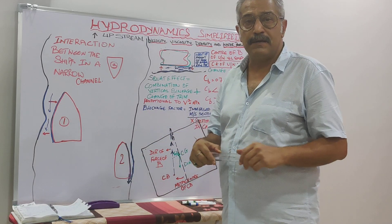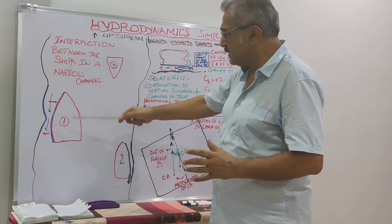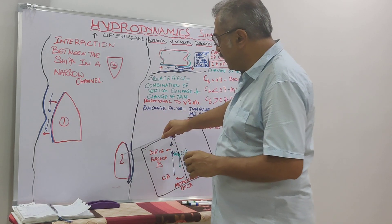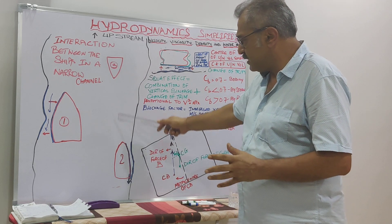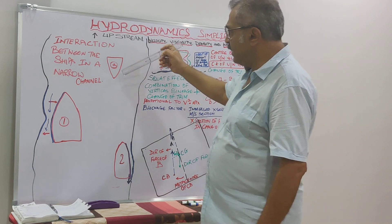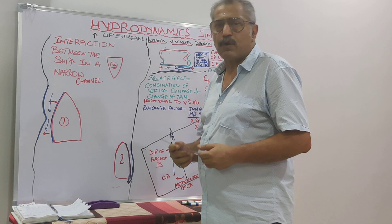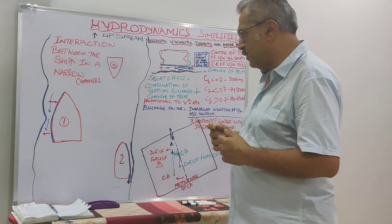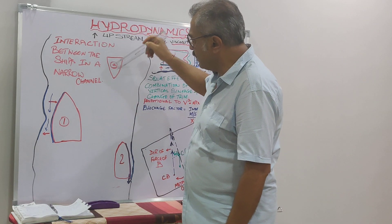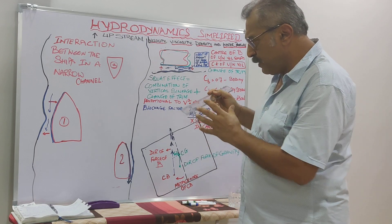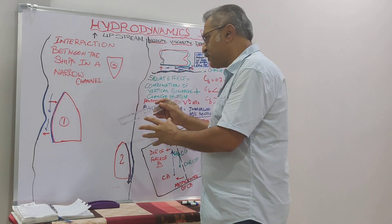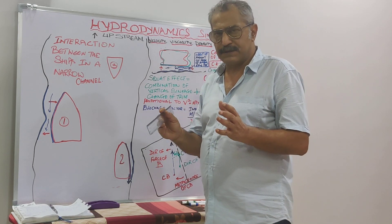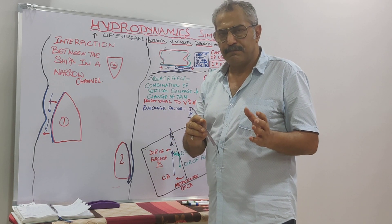Coming back to my initial statement: there are three ships — one, two, and three. Let's say this could be a Suez Max tanker. This one is a chemical tanker, say around 25,000 tonnes. And this being a small vessel — an offshore or supply vessel. So: Suez Max tanker, chemical tanker, and a supply vessel. These two ships are proceeding upstream, and this one is coming downstream. For you to understand the hydrodynamical interaction, you will have to be with me for some time on a hypothesis.